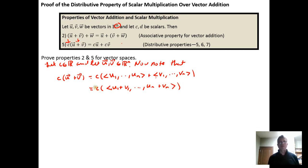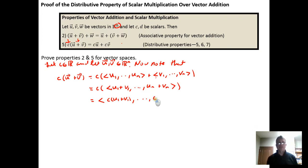Now this is just scalar multiplication of a vector, so we know we can distribute the c into each component. Distributing the c into the first component and all the way through the nth component gives c(u₁ + v₁), ..., c(uₙ + vₙ). The parentheses here are necessary — c is multiplied by a component that is built from two pieces, so we need the grouping in this step. You get marked down without the grouping.